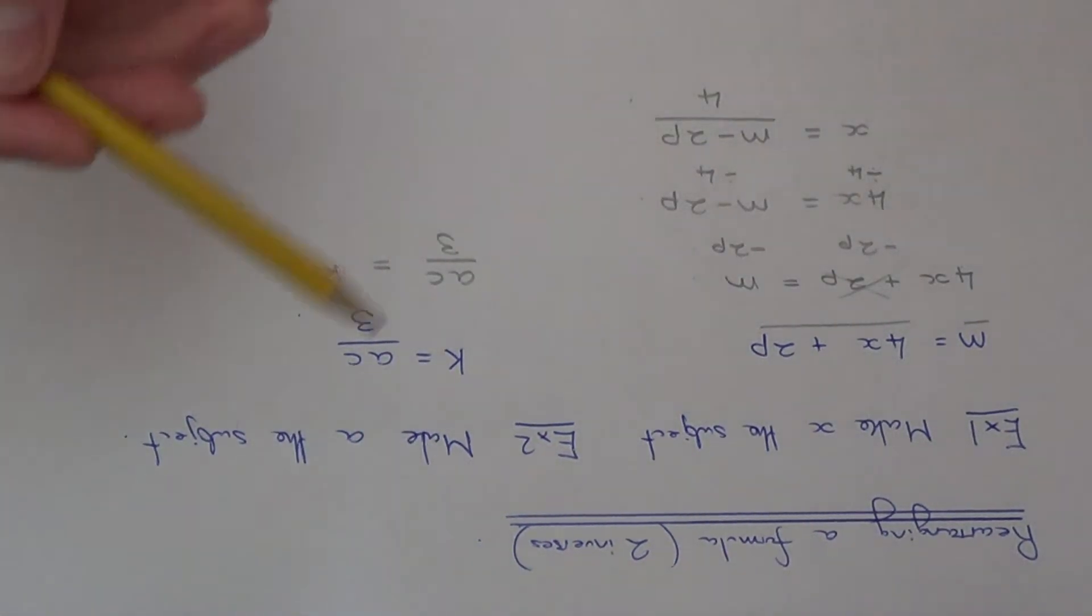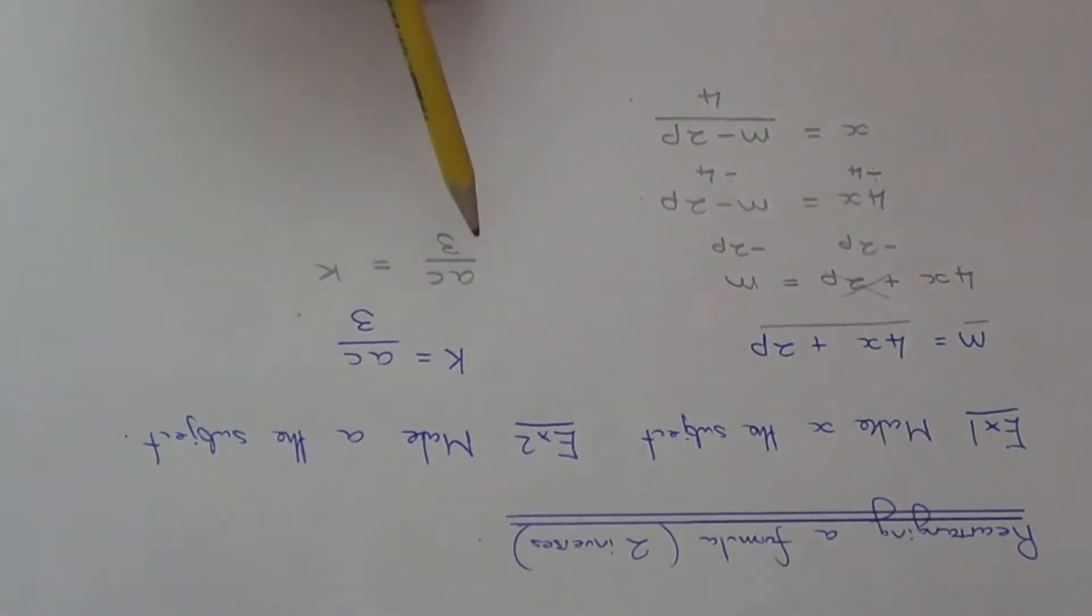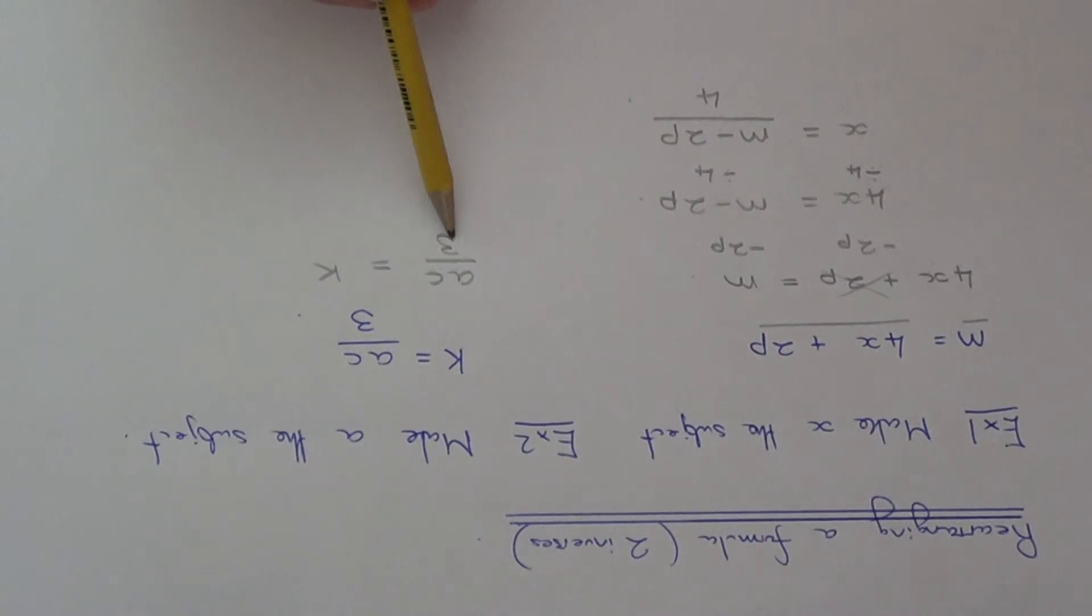Let's have a look what's happening to a because we need to make a the subject. First of all it's being multiplied by c and then we're dividing by 3. Again, do the opposites in reverse order, so let's get rid of the divide by 3 first of all.